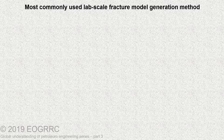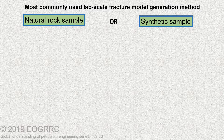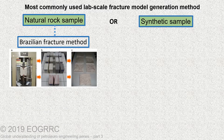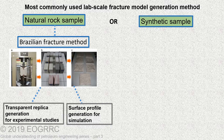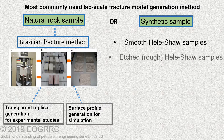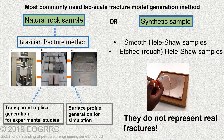The most commonly used lab-scale fracture model generation methods can be done with natural rock samples or synthetic samples. With natural rock samples, the Brazilian fracture method can be used to create replicas for further experimental studies or surface profile generation and simulation. For synthetic samples, smooth Hele-Shaw samples or etched Hele-Shaw samples can be used; however, they are not realistic and do not represent real fractures.